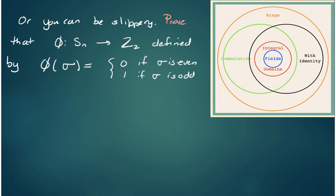Or you can be a little slippery and use a homomorphism to prove this. The homomorphism that I'm going to suggest is take phi to be the homomorphism that takes S_N into Z_2, defined by phi of any permutation is equal to 0 if sigma is an even permutation, and 1 if sigma is an odd permutation.